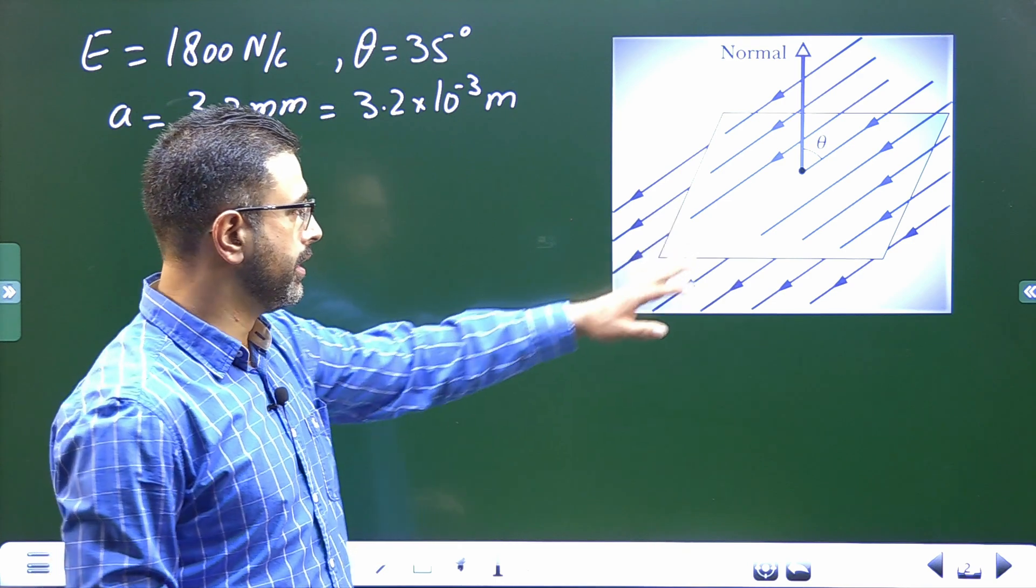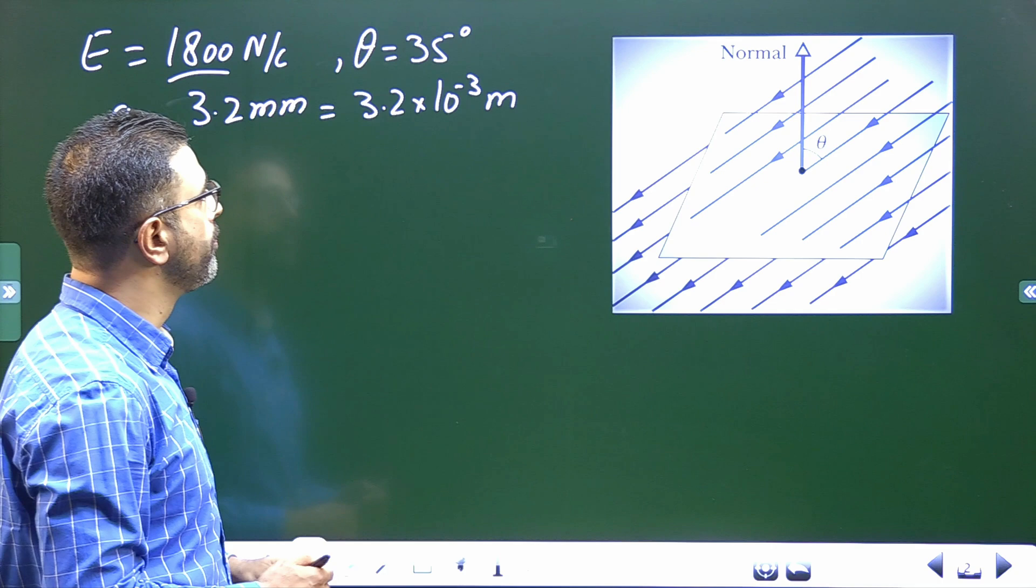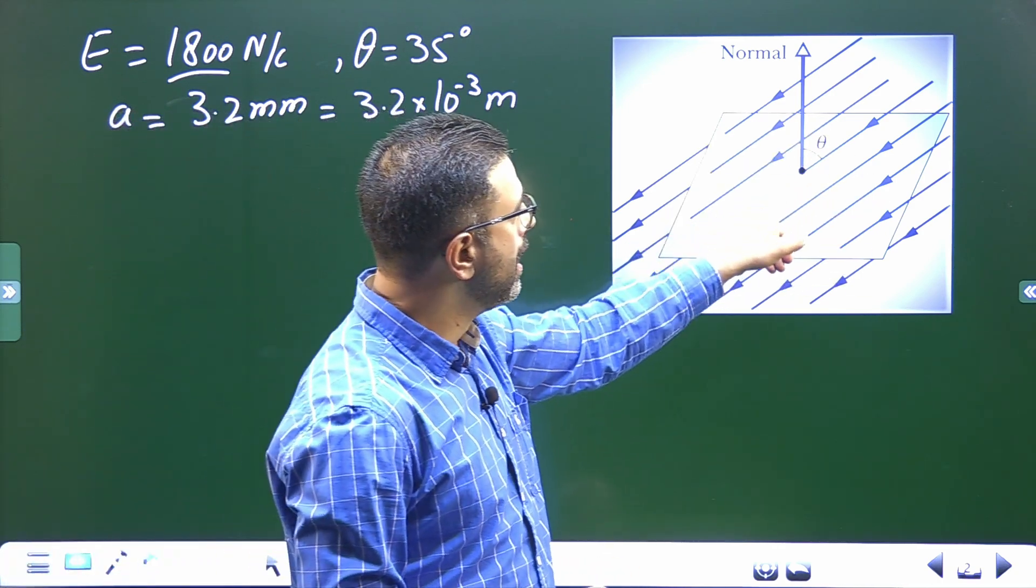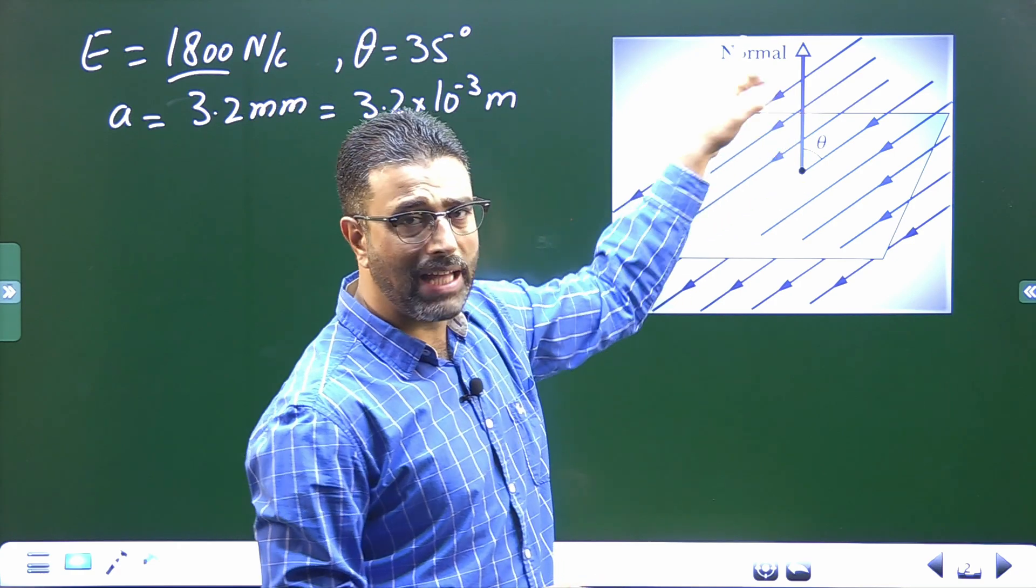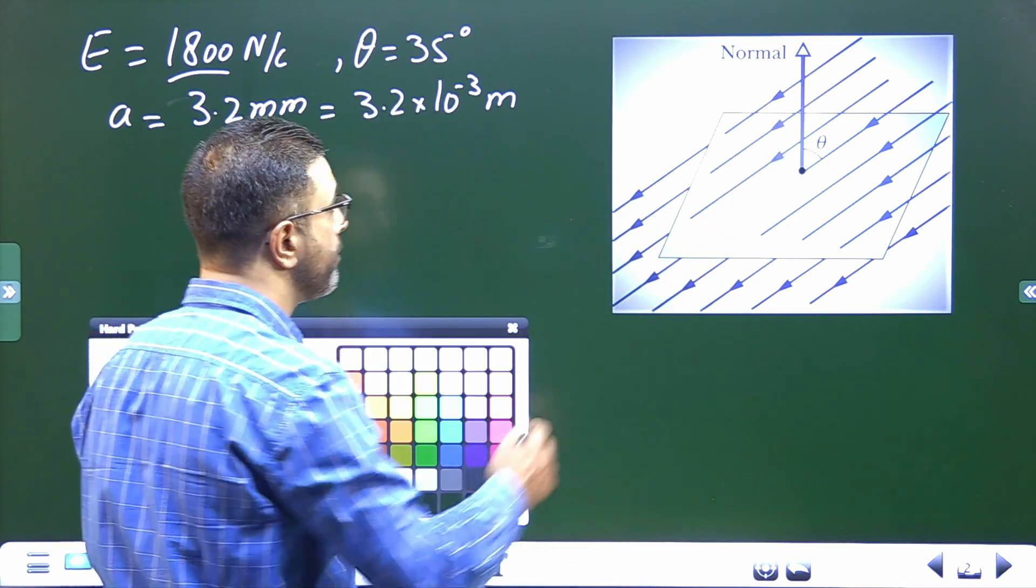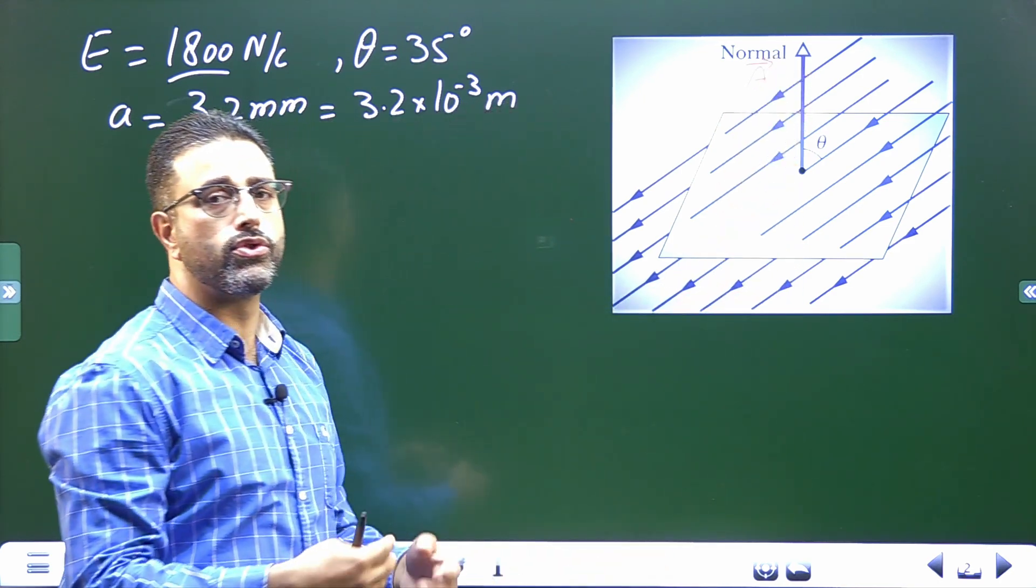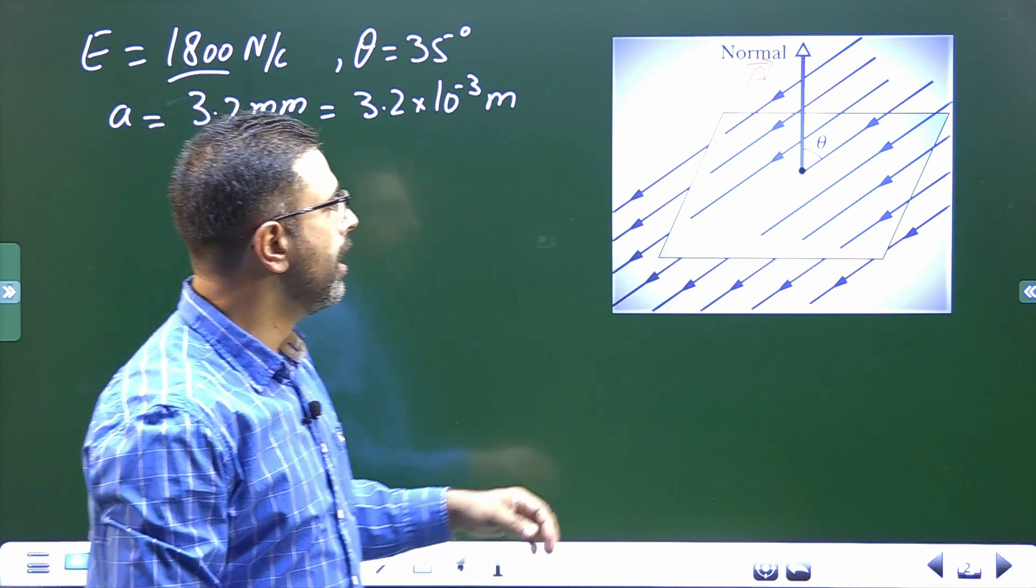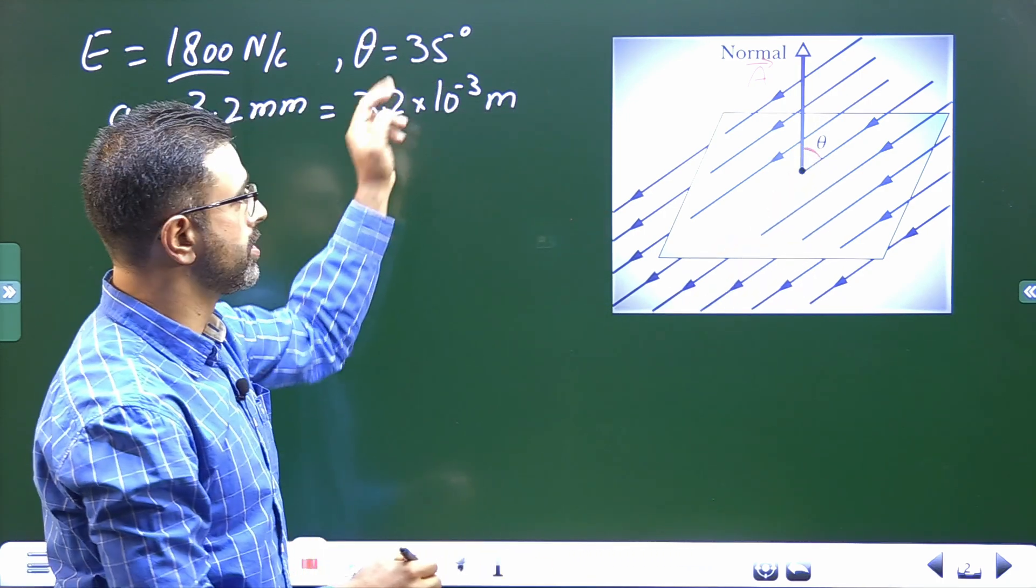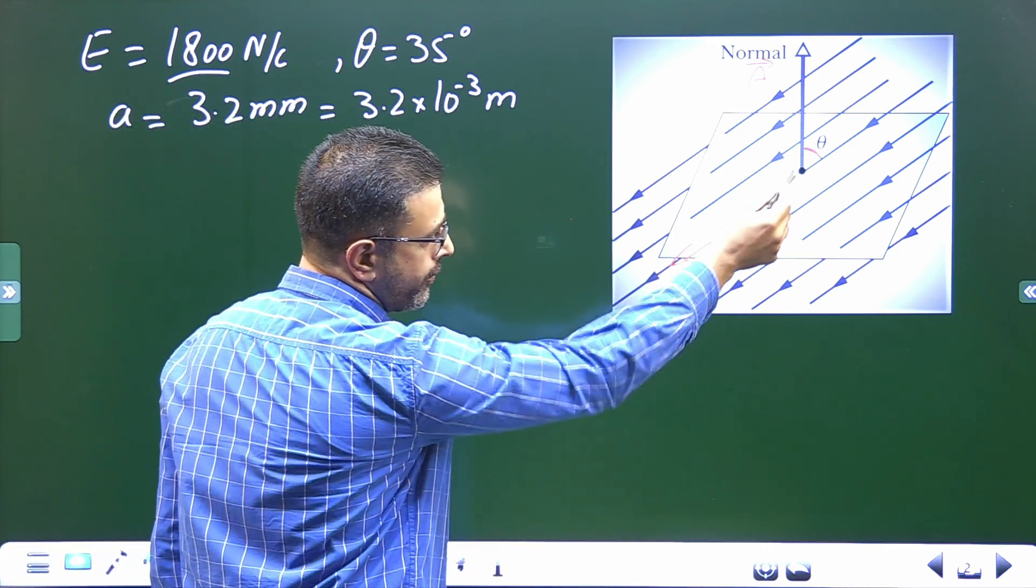a square surface. Direction of normal is here, so that is the direction of area. Remember, direction of area is always normal, perpendicular to the plane of the surface. And this angle here is 35 degrees, but electric field is downward, like this. The field is this way.